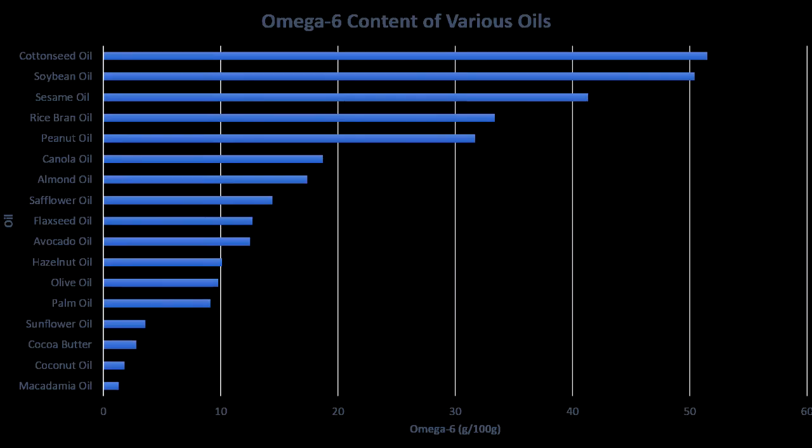Another thing to consider is omega-6s. If an oil has a lot of omega-6 fatty acids, it can be inflammatory — generally speaking. I try to avoid oils with very high amounts of omega-6s. As you can see in this picture, cottonseed, soybean, sesame, and these vegetable oils I avoid anyway are very high in inflammatory omega-6 fatty acids. Getting down to the bottom of the chart, macadamia nut oil, coconut oil, cocoa butter, palm oil, and olive oil are the oils I generally stick with.